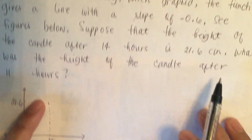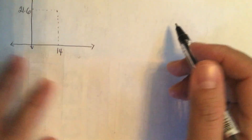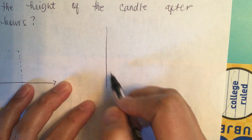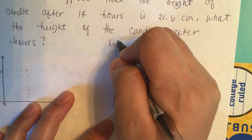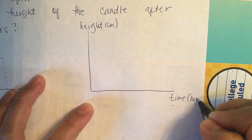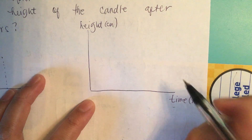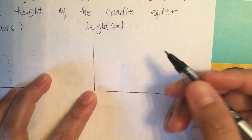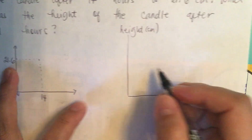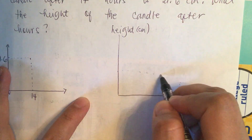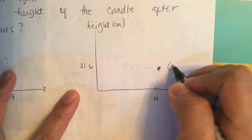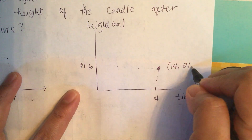We need to find the height of the candle after 11 hours. Setting up the graph with height in centimeters on the vertical axis and time in hours on the horizontal axis, we plot the given point: at 14 hours, the height is 21.6 centimeters — so the point is (14, 21.6).